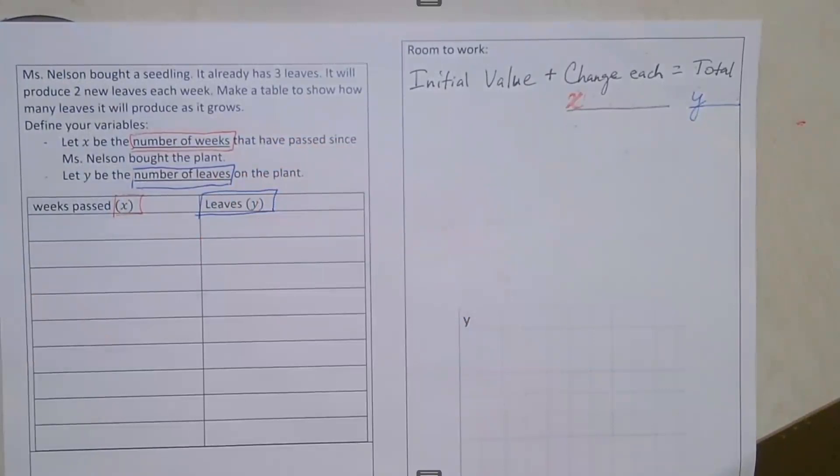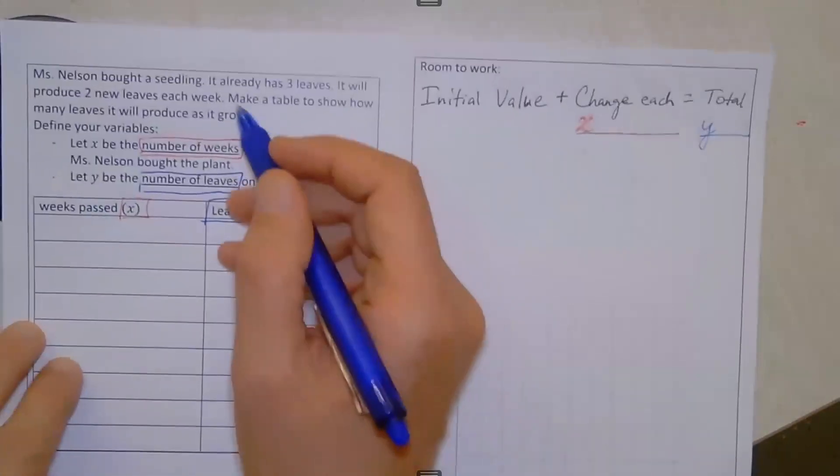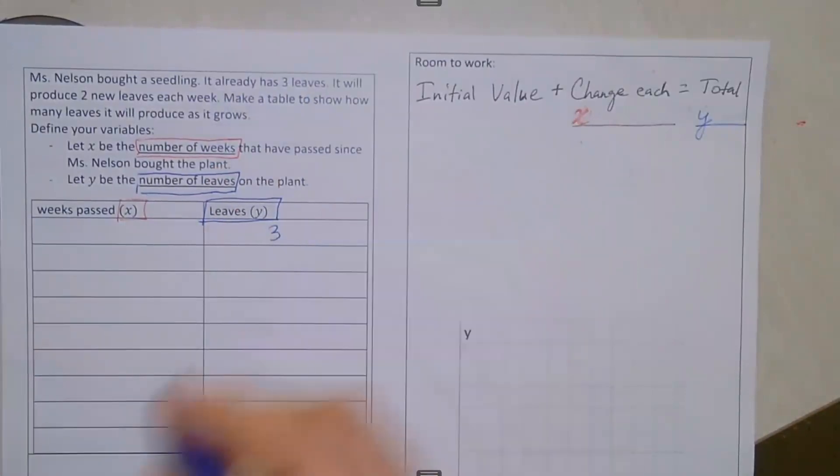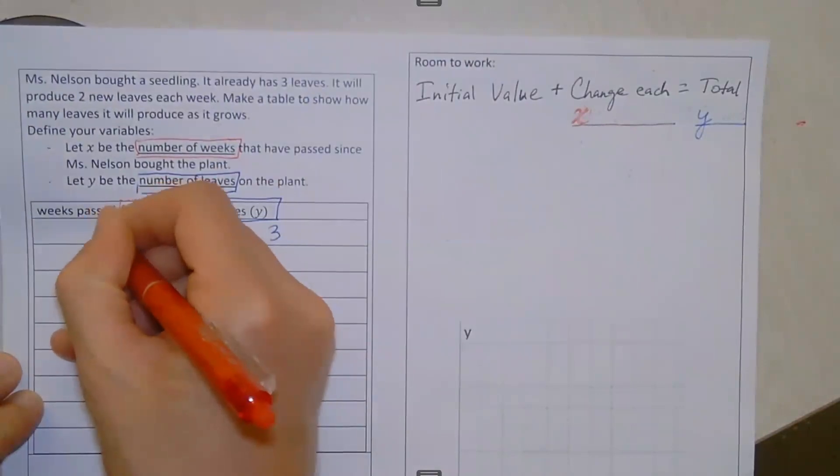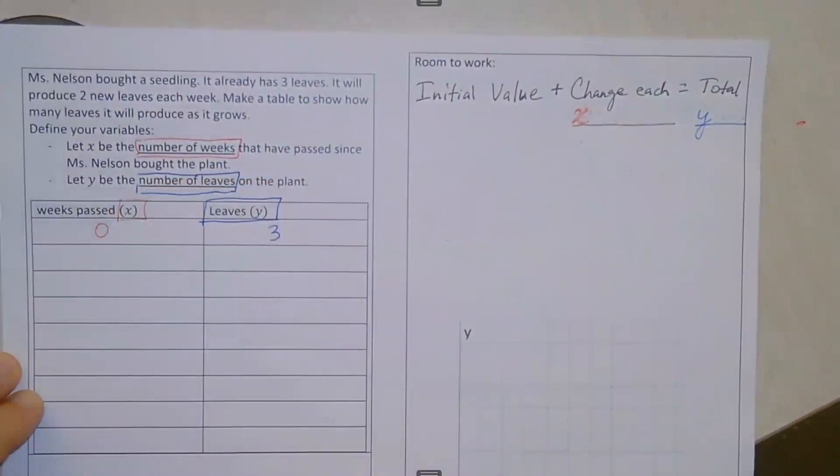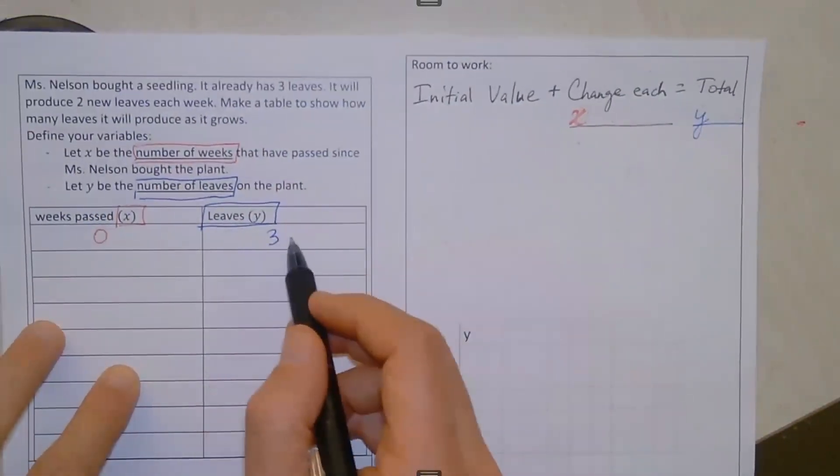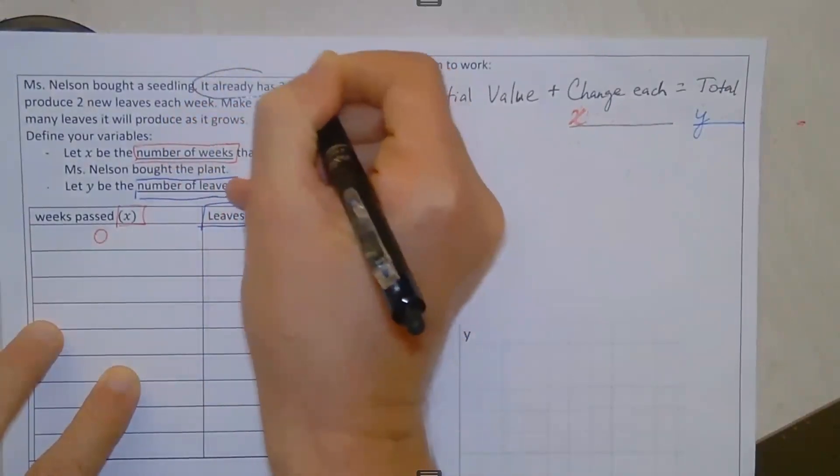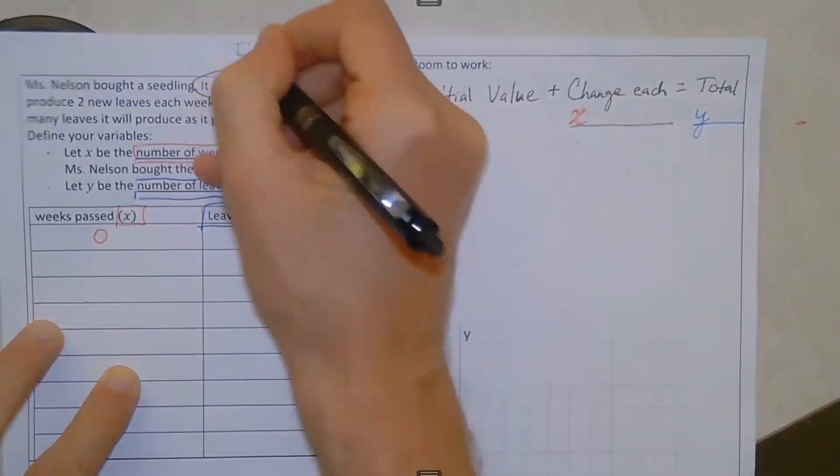In this case, we see that at the beginning of the story, it already has three leaves. So at the beginning of the story, how much time has passed? Zero weeks have passed. She just brought the plant home. We can already say an initial value. This is our initial value, the number of leaves at the beginning of the story. It already has three leaves. Three leaves is our initial value.